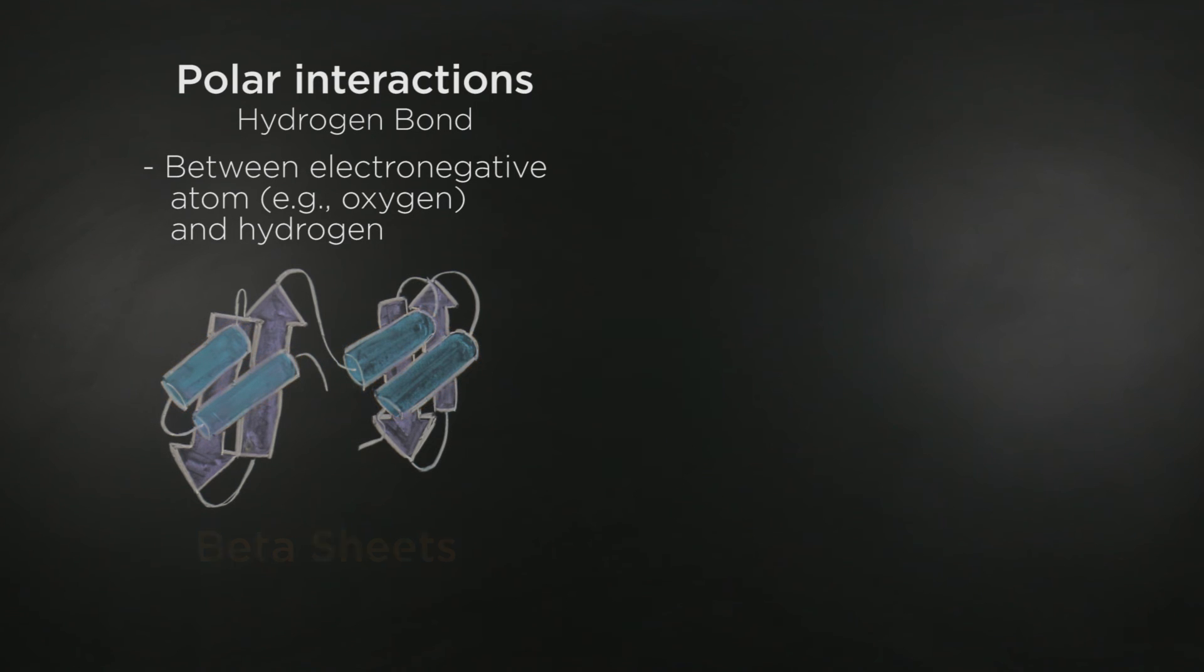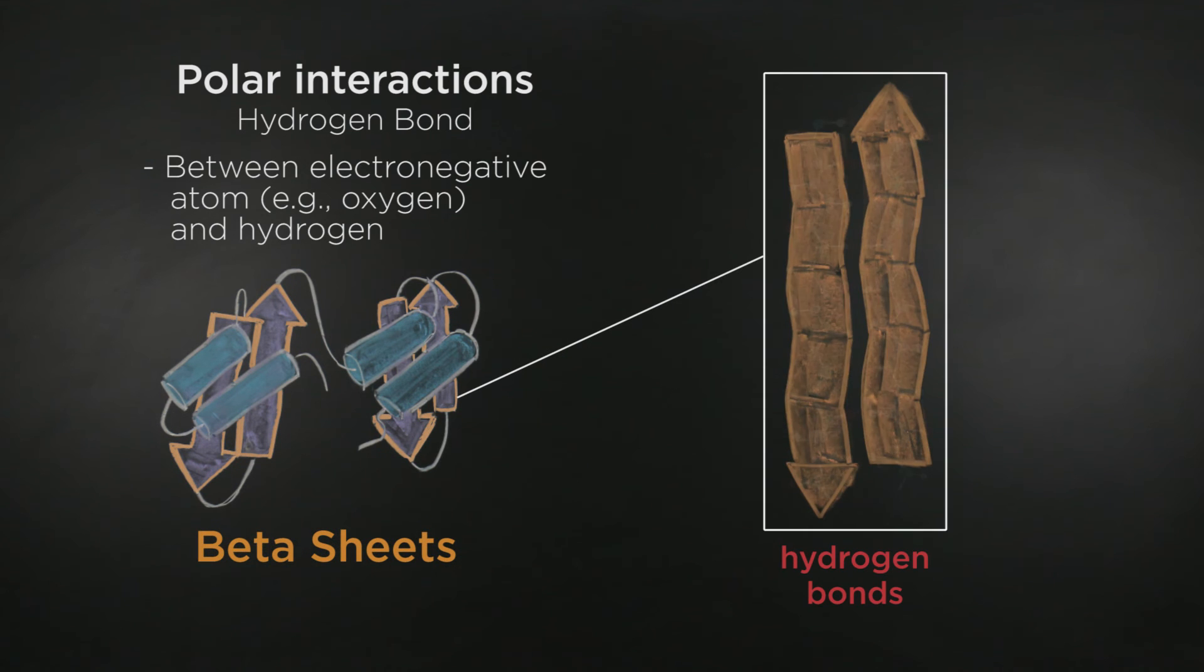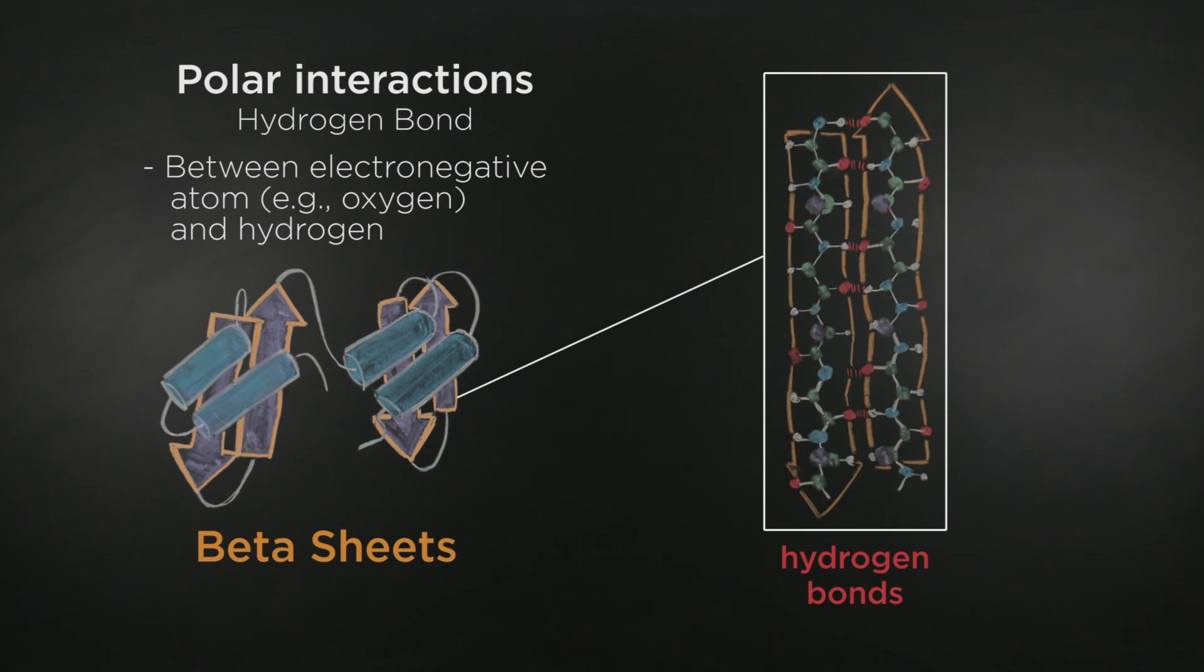Likewise, the beta sheet structures are also formed by repeated hydrogen bonds between the backbone amide groups of adjacent beta strands.